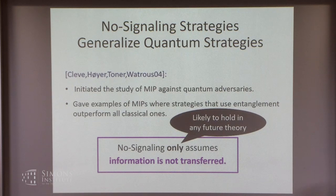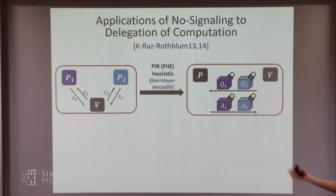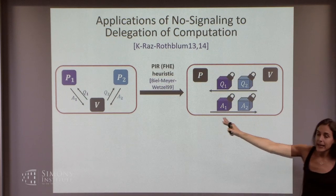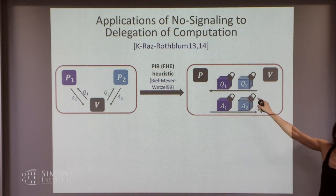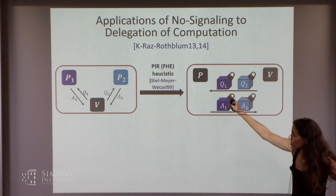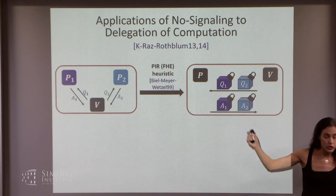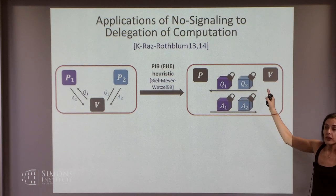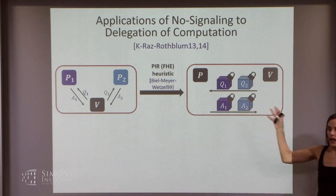More down to earth and relevant to this workshop is the connection to delegation. There's a beautiful heuristic called the PH heuristic by Bill Meier and Wetzel. They proposed: take any MIP with two provers, and convert it to a delegation scheme using crypto. Specifically, instead of giving two queries to different provers, give them to the same prover but encrypt using different fresh keys. The prover does the computation under the hood of the encryption and gives the answers.